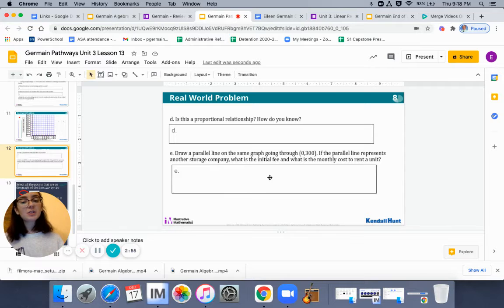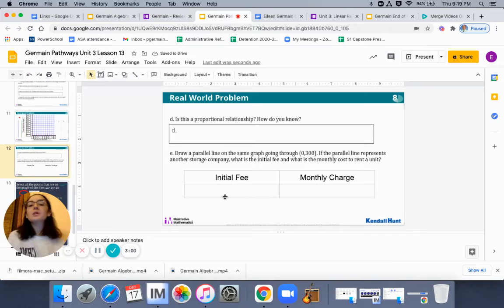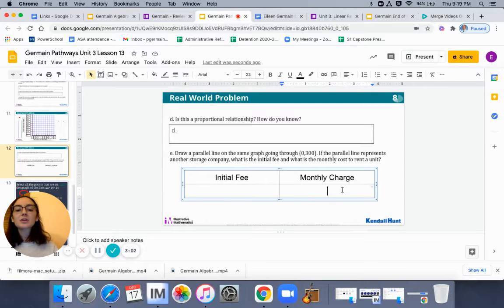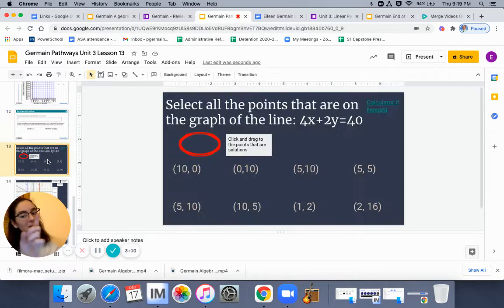And I'm actually going to make a change on here. And so I just added a table on here where you can tell me the initial fee and the monthly charge if you have a parallel line that starts at 0, 300.